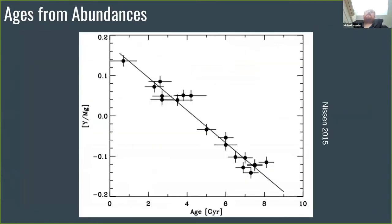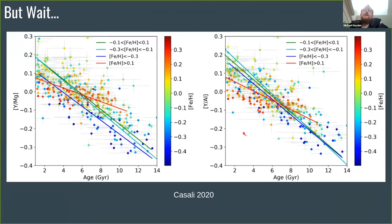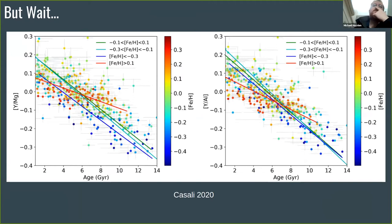All of the different elements have different production sites, and those production sites have different timescales. So if you can measure enough elements well, you should be able to use their chemistry as a clock or tie them to where they were born. Neeson 2015 took yttrium, an S-process element, and magnesium, an alpha element, and found a nice linear relation between yttrium-to-magnesium and age using solar twins in the solar neighborhood.